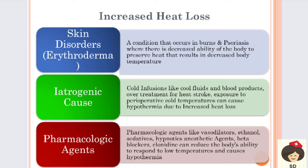In psoriasis, a condition due to infection, there will be itching of the skin and the skin gets removed. In these conditions, the skin is not able to preserve heat and the body heat is lost through the skin, resulting in decreased body temperature. Iatrogenic cause involves giving cold infusions like cool fluids and blood products. This is done in cardiac arrest or stroke to prevent tissue damage. When more of these fluids are administered, the patient can go for severe hypothermia.